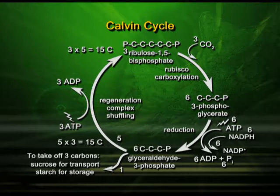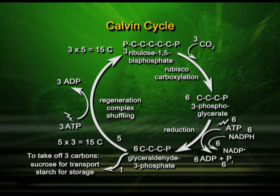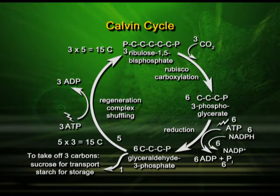We have reached the point of formation of glyceraldehyde 3-phosphate after the process of reduction. Now the next step is very important. By a series of steps, starch and sucrose are produced — this is the food for the plant. The plant will use it as food, and of course we will also use it. But now, the next step called regeneration is more important than the previous step.